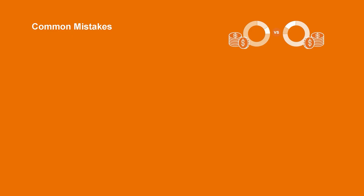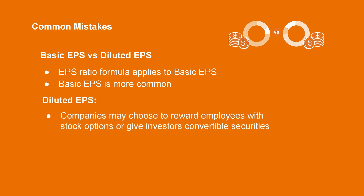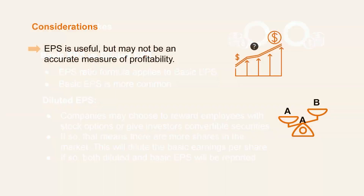Now that we understand how to calculate earnings per share, let's clear up a common misconception. There's a difference between basic earnings per share and diluted earnings per share. The calculation we just completed applies to basic EPS, which is the more common metric. However, sometimes companies give their employees stock options or supply investors with convertible securities. If those options are exercised, more shares will be issued, which dilutes or reduces the basic EPS. As a result, companies report two separate figures to distinguish between basic and diluted earnings per share.